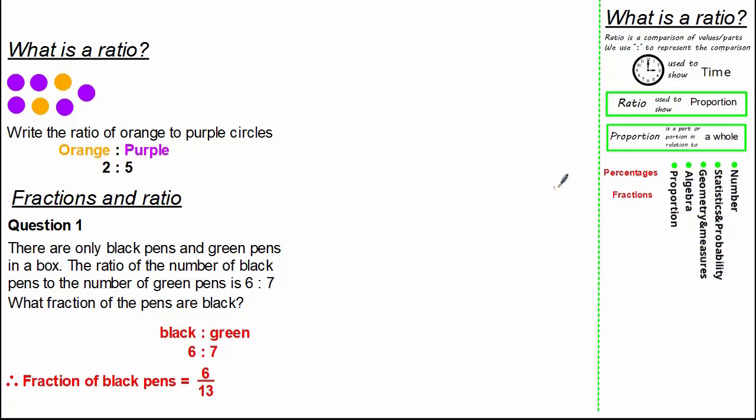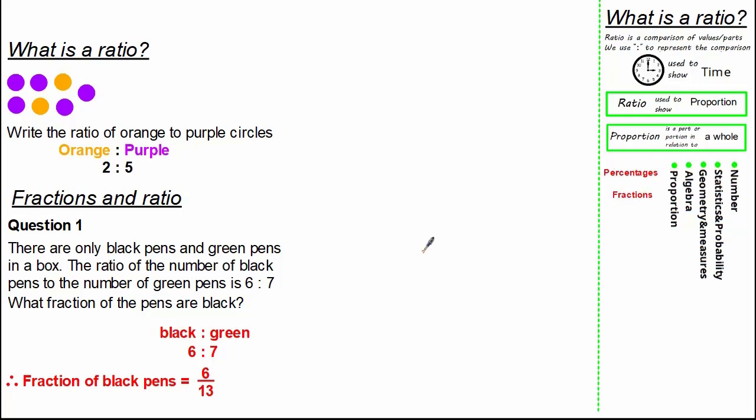We also have percentages within the proportion strand. This is because proportion is a part or portion in relation to a whole, and we know a whole is indicated by 100%. So let's make the link between ratio and percentages in an exam question.